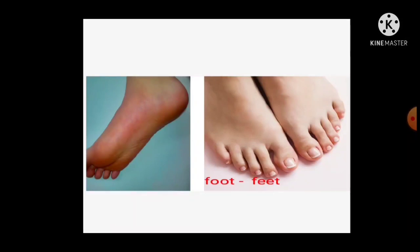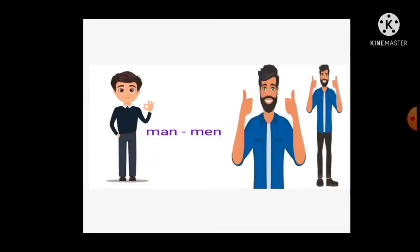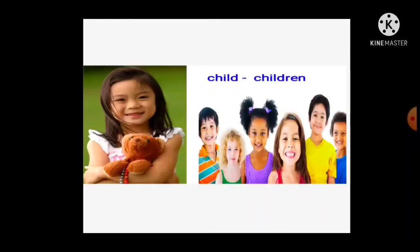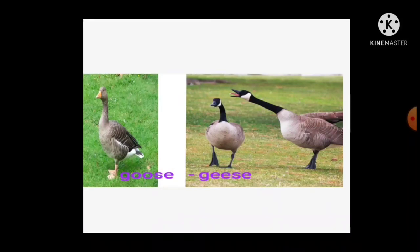Some words form a new word for the plural. Foot — feet (OO changes to EE). Tooth — two teeth (OO changes to EE). Man — men; woman — women. Child — children (we add REN). Ox — oxen. Goose — geese (OO changes to EE).